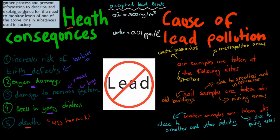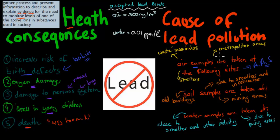This is some of the evidence as to why we need to monitor lead levels. To figure out the causes of lead pollution, we can take different types of samples. For example, we might take an air sample at some of the following sites and put it through the atomic absorption spectrometry machine. These air samples are often taken at waste incinerators — once we burn the waste, we check how much lead is in the air sample around it.